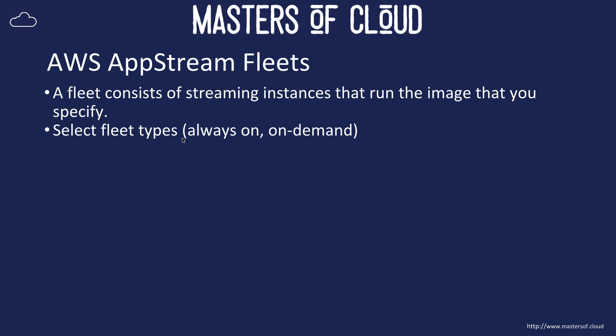There are two types of fleets: always-on and on-demand. When users connect to an on-demand fleet, the instance will spin up, and that will take somewhere between one to two minutes before the instance is ready for users to connect.